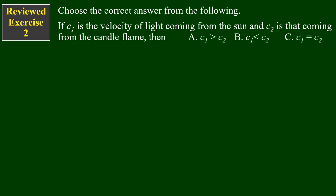If C1 is the velocity of light in medium 1, then: A) C1 is greater than C2, B) C1 is less than C2, or C) C1 is equal to C2.